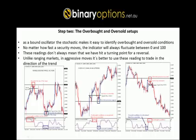Here we have a very aggressive move to the downside. We hit an oversold condition in a downtrend, meaning we are due for a correction. When we hit previous levels of support now being tested as resistance, and the oscillator is giving us overbought conditions, and when we break below a significant level of support, we have a signal to buy puts and trade the main move. This is how you trade the overbought and oversold setups in range-bound, up, and down markets.